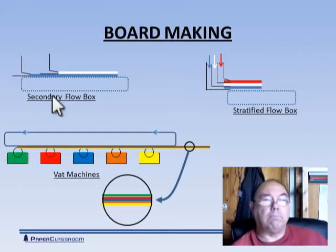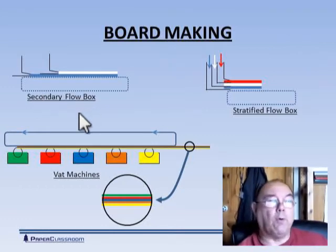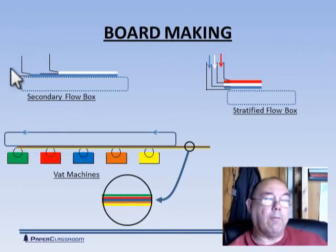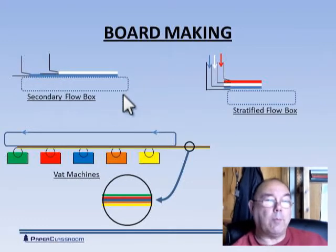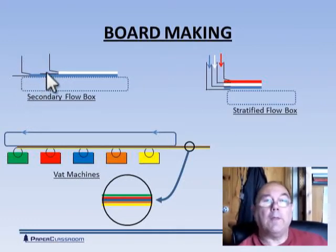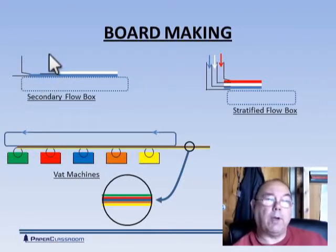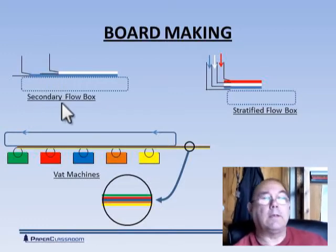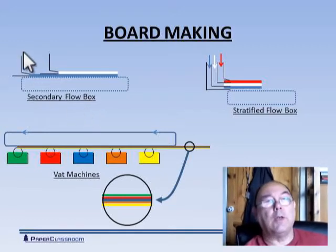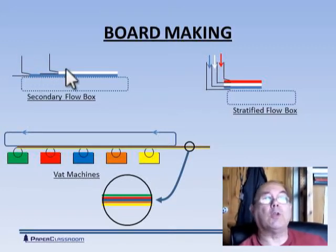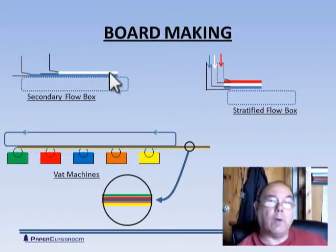Here you'll see my schematic of a very simple fourdrinier. We have one flow box here, we have the papermaking wire. On this particular operation we have a second flow box there, and we call this secondary flow box or secondary head box. So you get two sheets produced, one on top of another, along a single wire.